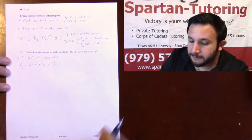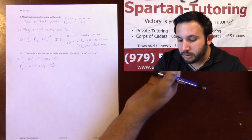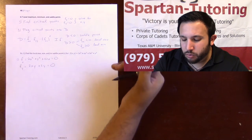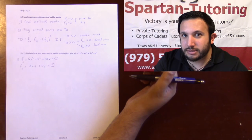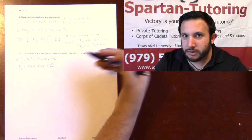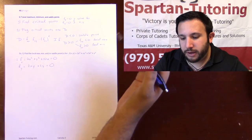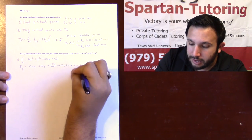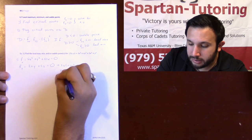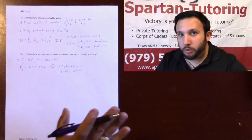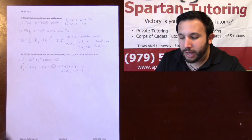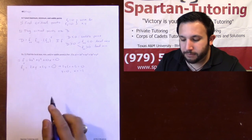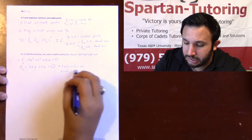Now take a step back and see which equation would be easier to solve. I highly recommend the second equation — in fy I can factor out a 2y, leaving x plus 1 inside. Setting that equal to zero gives y equals zero and x equals negative one. These are not critical points themselves; rather, y equals zero is one condition and x equals negative one is another, and we'll substitute each into fx.